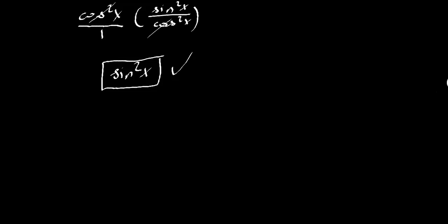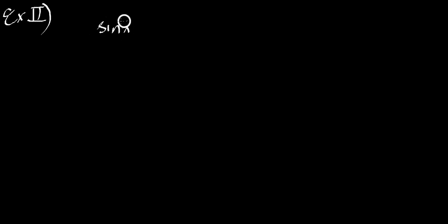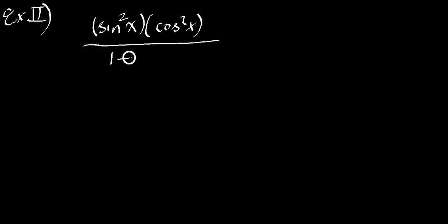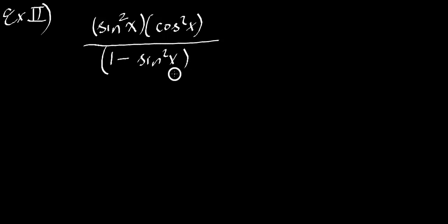My next example will be pretty short. Sample 2: sine multiplied by cosine over 1 minus sine x squared. We have 1 minus sine x squared — 1 minus something squared. That's how I think of it, and I think: think identities, simplify.